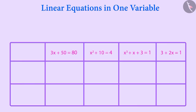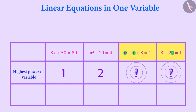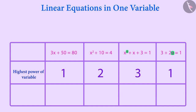Now, there are some equations with one variable. Look at the first equation — the highest power of the variable x is 1. In the second equation, the highest power of x is 2. Can you find the highest power of the variables in the other two equations? In equations 3 and 4, the highest power of x is 3 and 1 respectively.